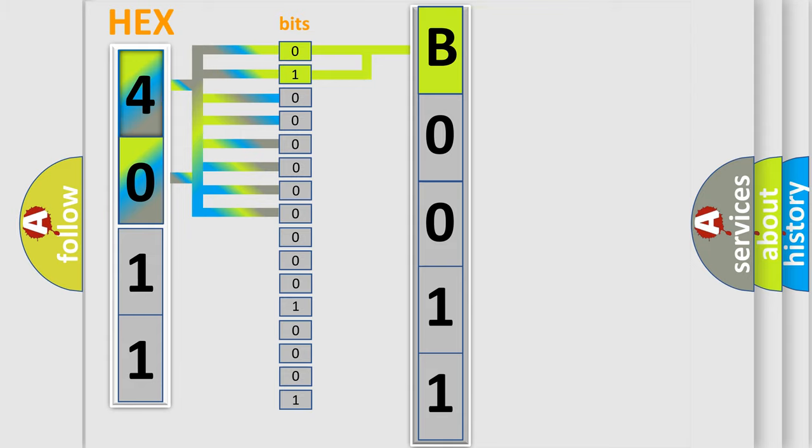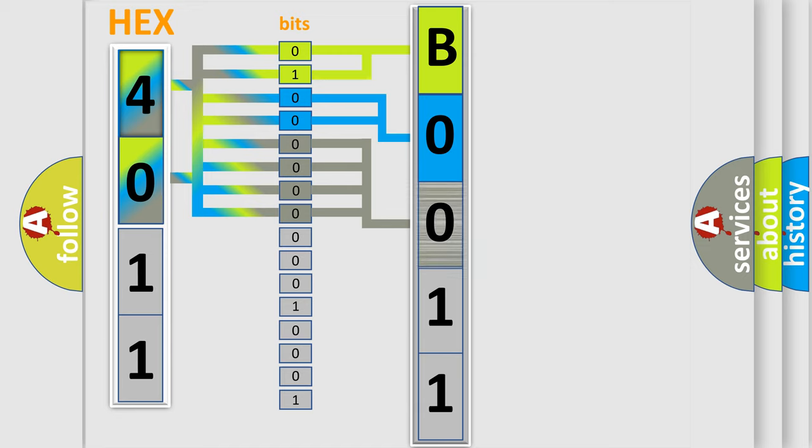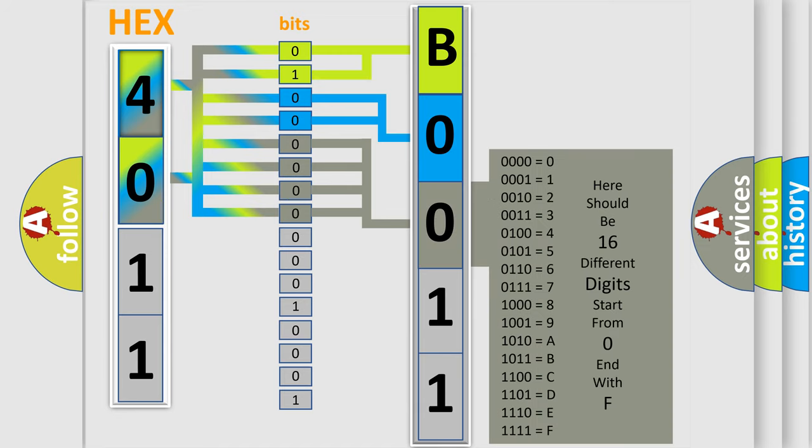The remaining bits of the first byte define the third character of the code. The second byte is composed of a combination of eight bits. The first four bits determine the fourth character.